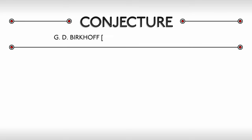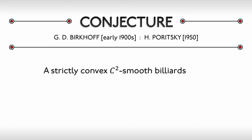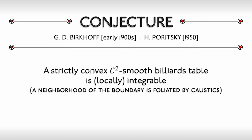This brings us to the Berkhoff conjecture, put forward by Berkhoff in the early 20th century and formalized by Poritzky in 1950. This conjecture states that a Berkhoff billiard has a neighborhood of its boundary foliated by caustics if and only if it is an ellipse.